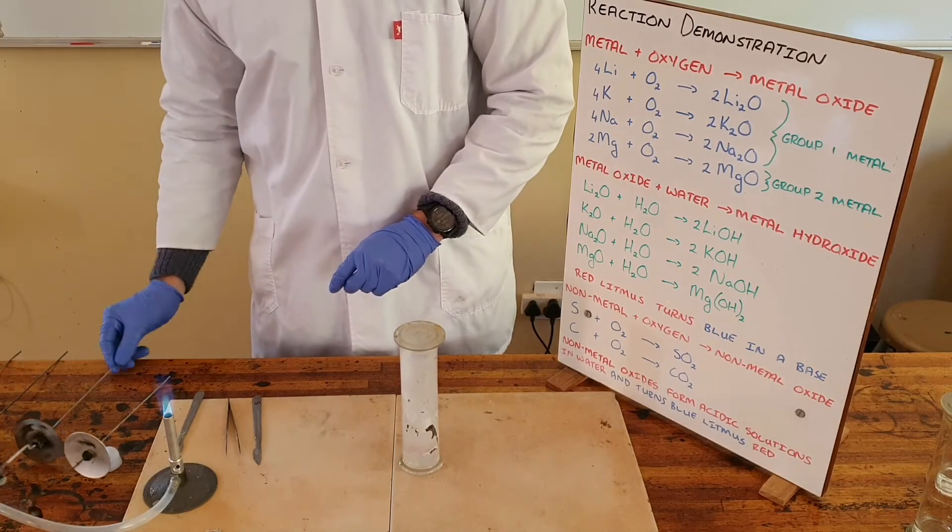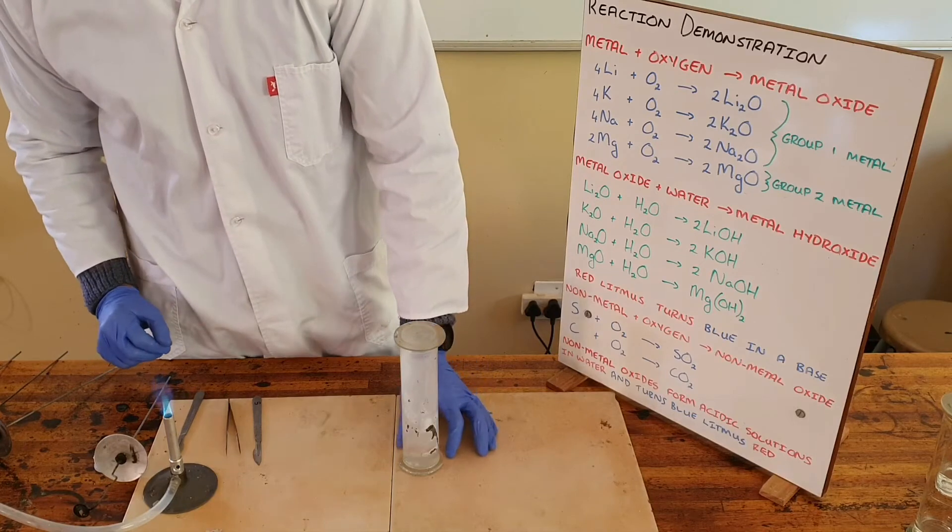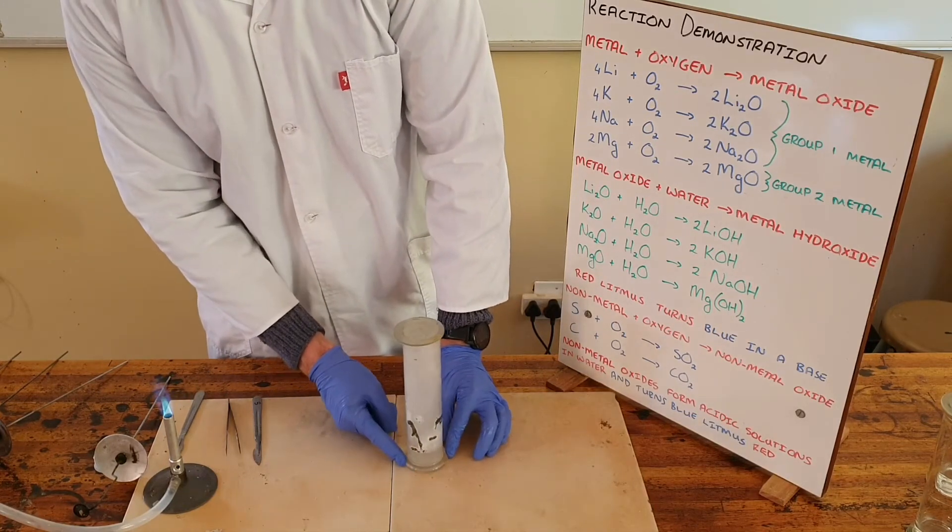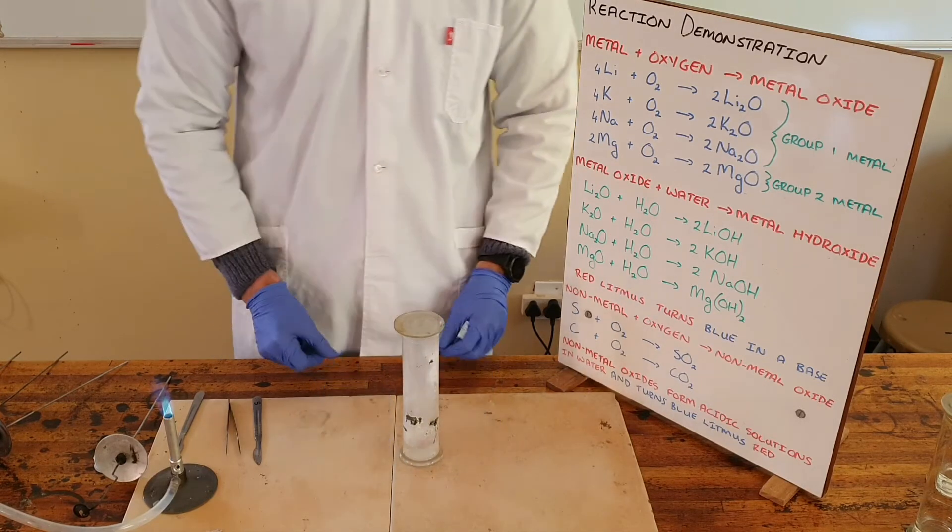We can see here—it's difficult to tell because the gas jar is so hot—but we can see that the red litmus paper does turn blue, which shows that magnesium oxide in water has formed a basic solution.